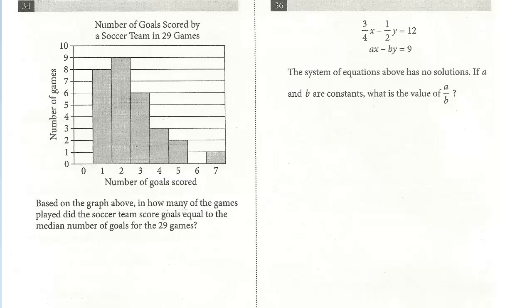Based on the graph above, in how many of the games played did the soccer team score goals equal to the median number of goals for the 29 games? They tell us that 29 is the total number of games, so it saves you time from adding them up based on the histogram. 29 is an odd number, so to get the median...